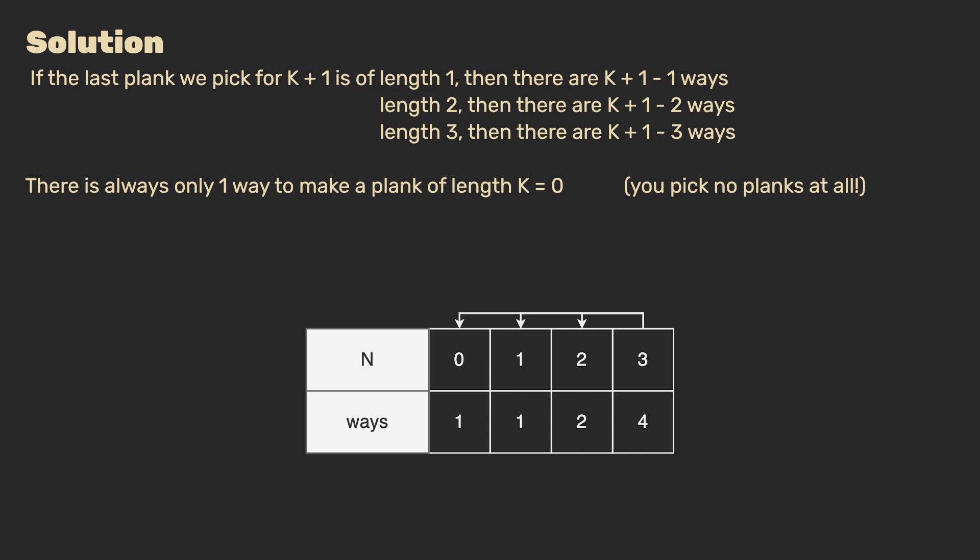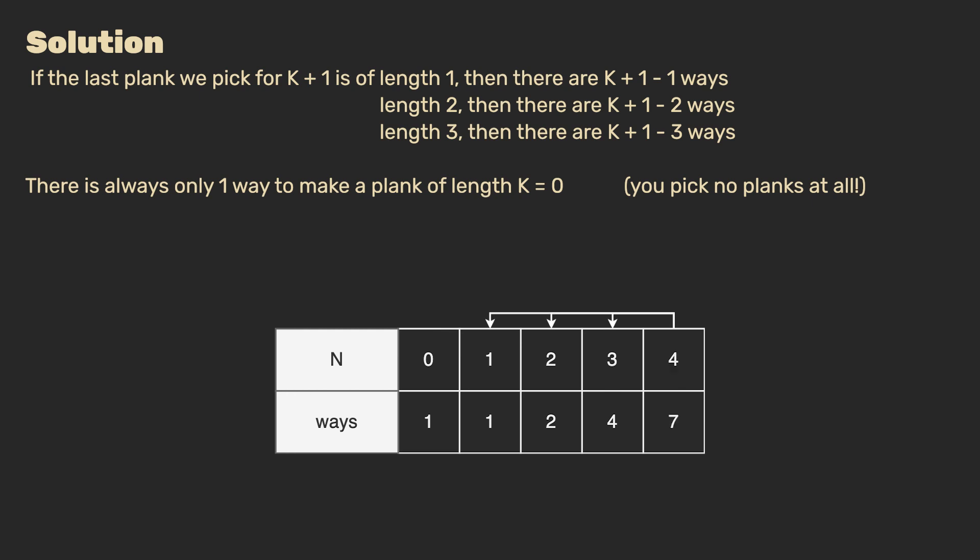Next up, n equals 3. From this point onward, all three cases apply, because picking 3 as the last plank means we have to look at n equals 0, which is in our table.